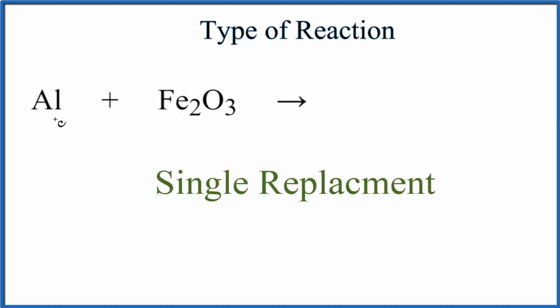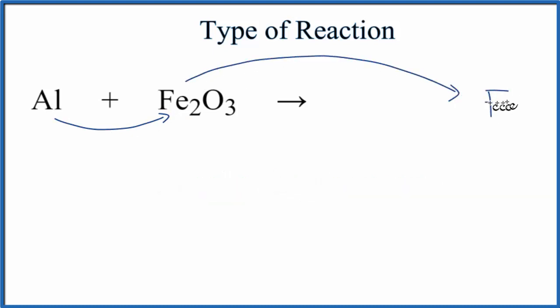So we think about it, the aluminum would come in and it would push the iron out, and then we'd have iron Fe by itself, and then the aluminum would be with the oxygen. So I'm just going to write AlO for the aluminum plus the oxygen. Let's make that little L like that, plus the iron.